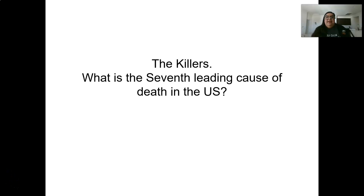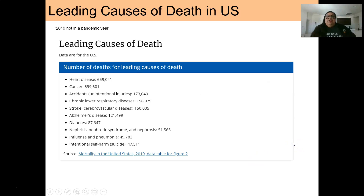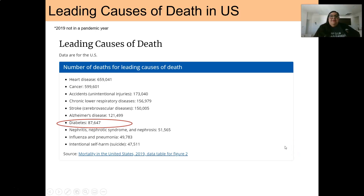Welcome back. We are continuing our unit on the killers. We are learning about the seventh leading cause of death in the U.S., so let's get started. The seventh leading cause of death in the U.S. in a non-pandemic year happens to be diabetes. This data is from the CDC from 2019. We have previously talked about heart disease, cancer, stroke, and Alzheimer's disease, and now we are going to cover diabetes.